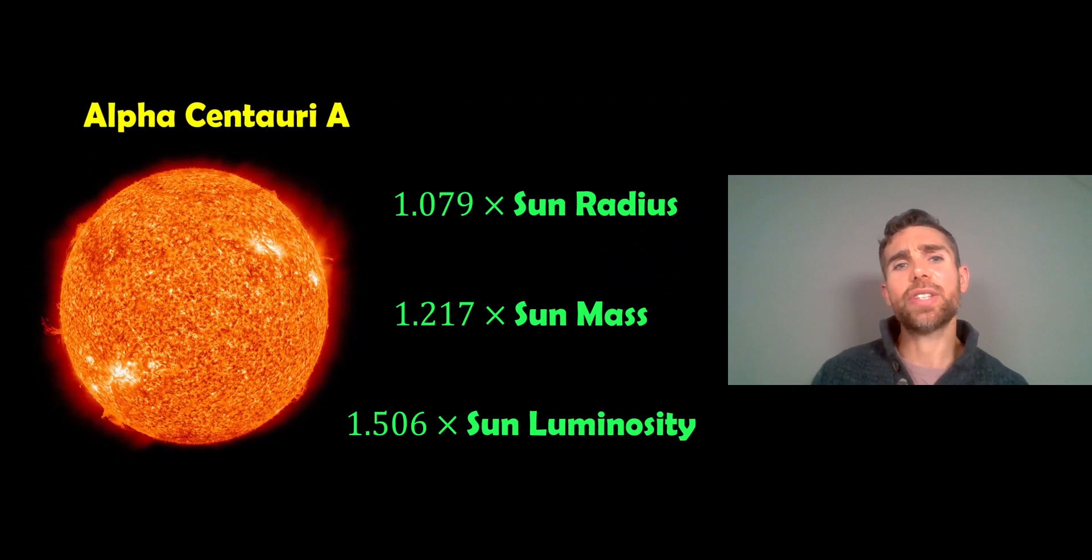So Alpha Centauri A is almost kind of sun-like. Its radius is a little bit more than the sun's, just over one. The mass is about 1.2 times the mass of the sun. And it's a little bit more luminous. It's about 1.5 times the luminosity of the sun. It's a bit brighter than our sun by a half, essentially. And this is the main primary component of the system.